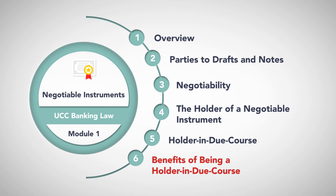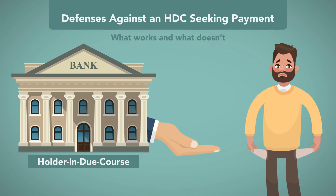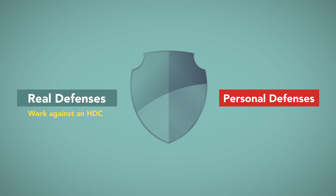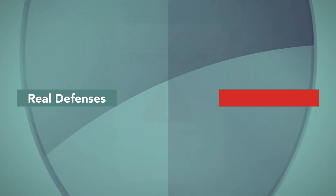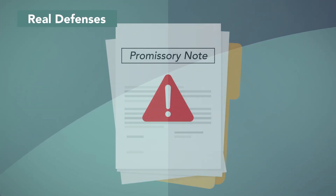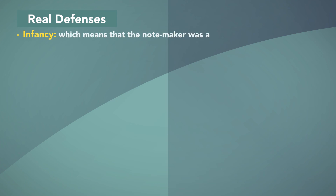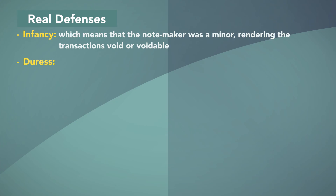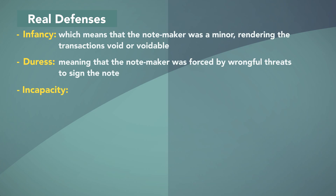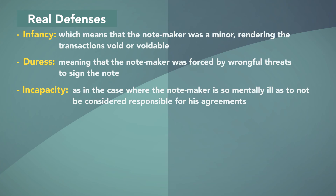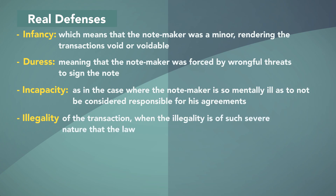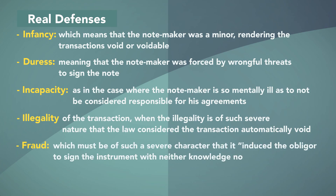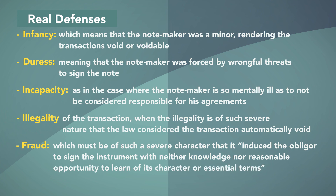Benefits of being a holder in due course. Against an HDC seeking payment, the code allows some defenses but disallows others. Those few defenses that will work against an HDC are referred to as real defenses, while defenses against which the HDC is immune are referred to as personal defenses. Real defenses include: infancy, meaning that the note maker was a minor, rendering the transaction void or voidable; duress, meaning that the note maker was forced by wrongful threats to sign the note; incapacity, as in the case where the note maker is so mentally ill as to not be considered responsible for his agreements; illegality of the transaction, when the illegality is of such severe nature that the law considers the transaction automatically void; fraud, which must be of such a severe character that it induced the obligor to sign the instrument with neither knowledge nor reasonable opportunity to learn of its character or essential terms; and discharge of the obligation in insolvency proceedings.